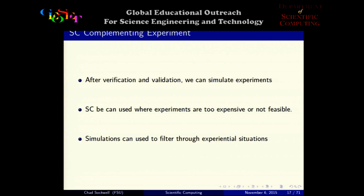The next topic is scientific computing complementing experiment. Once we've verified and validated our code and know it predicts correctly, we can make future predictions about things we're not sure about yet. This is especially advantageous where experiments may not be feasible — such as on a star light years away — or where they're far too expensive. Simulations let you filter through experimental scenarios, find the area you really want to probe physically, and drastically cut down experiment time and cost.